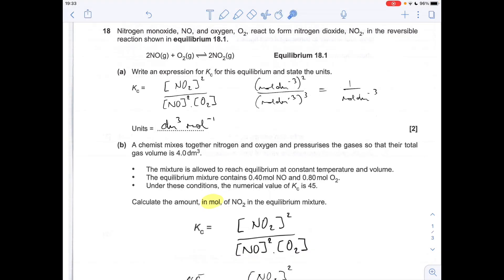Okay, so part A: Kc expression and units. Remember, Kc uses square brackets because it deals with equilibrium concentrations. It's product over reactant, and the number balance in the equation becomes a power. Units-wise, we've got mol/dm³ squared on the top, cubed on the bottom, so that will cancel down to 1 over mol/dm³ cubed.